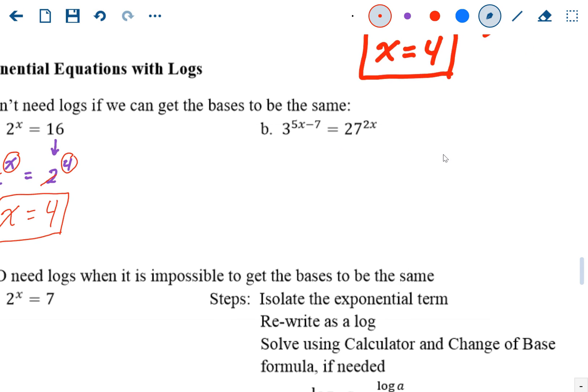Same thing on this other one. This one's a little longer. You have a base of 3 and a base of 27, but luckily we could rewrite 27 as 3 to the third power, and it's still being raised to the 2x power. You always want to make the bigger base become a smaller version.